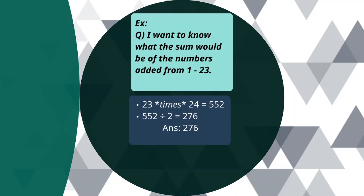23 times 24 equals 552. The second step is to divide the thing by 2. So 552 divided by 2 equals 276. Our answer is 276.